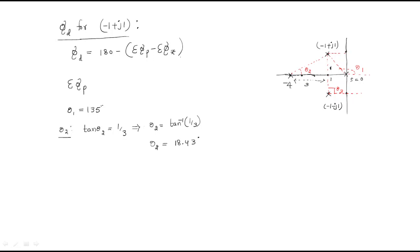Theta3 is the angle between the two complex conjugate poles, minus 1 plus j1 and minus 1 minus j1. Looking at the diagram, theta3 is directly 90 degrees.